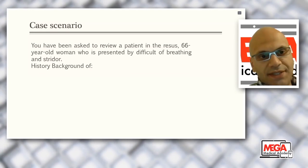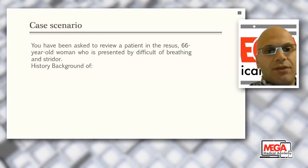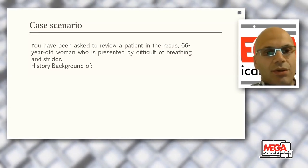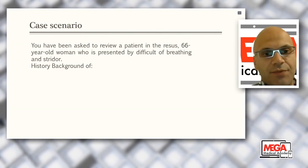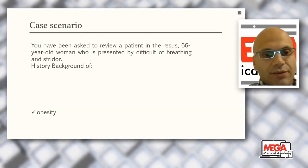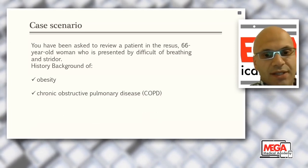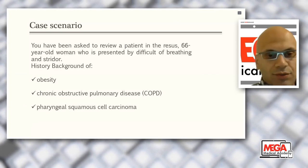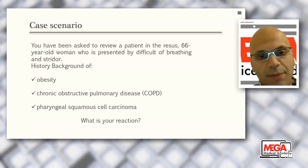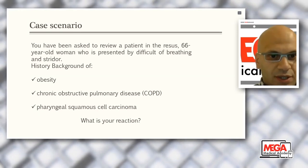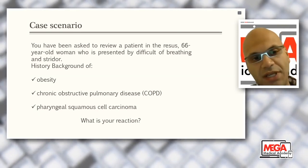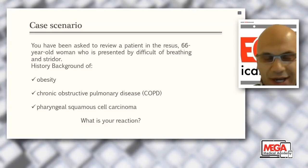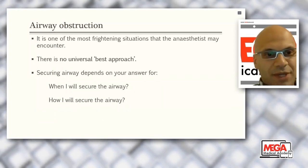Consider this case: you've been asked by the A&E registrar to review a 66-year-old woman presenting with difficulty breathing and stridor, with a background history of obesity, high BMI, COPD, and pharyngeal squamous cell carcinoma. What is your reaction and what will come to mind while you are going to check this patient? Of course, when you hear stridor, your heart rate will come up and you'll be more alert and worried about the patient.